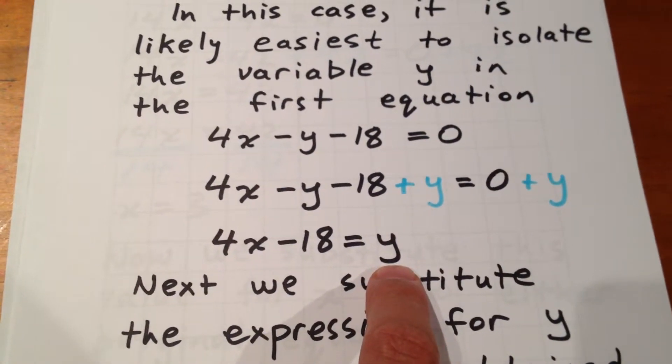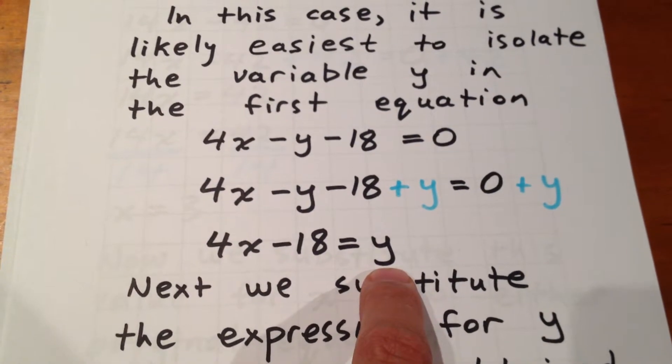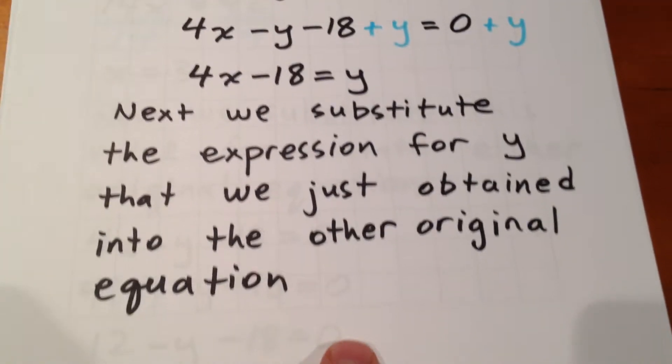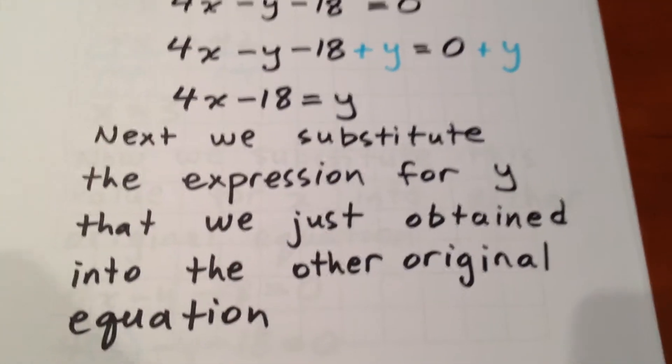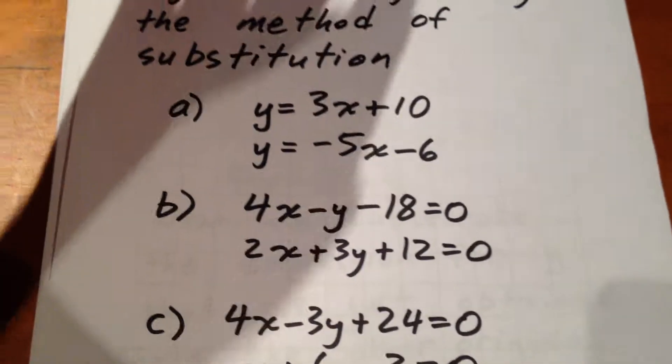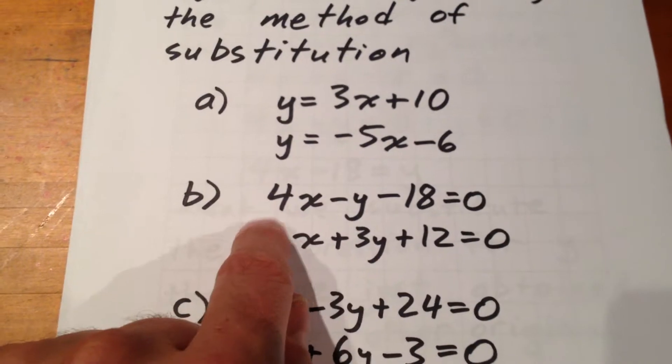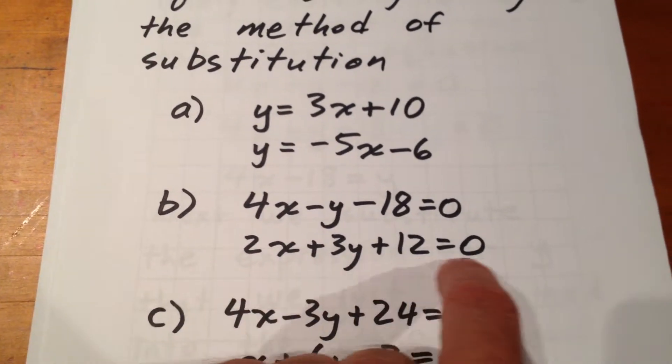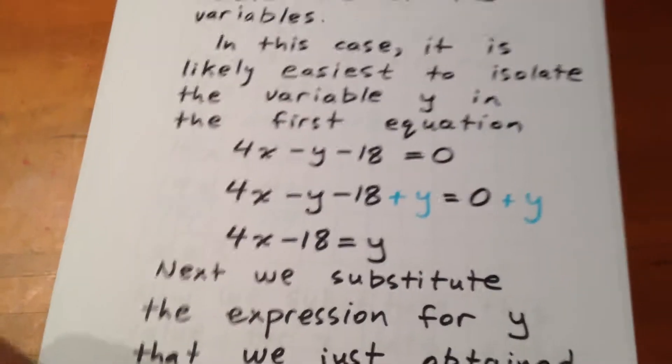We've now solved for y as an expression involving x. What we can now do is substitute that expression for y into the other original equation. In this example we isolated y by rearranging the first equation. That means after we isolate y we're going to have to sub it into the second equation.